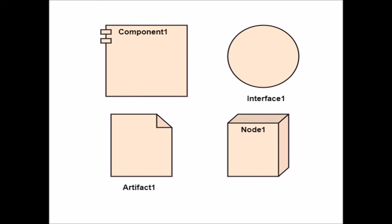A deployment diagram portrays the development view of the system. It helps in visualizing the topological view of a system. The deployment diagram incorporates nodes, which are physical hardware. The nodes are used to execute the artifact, and instances of artifacts can be deployed on instances of a node.